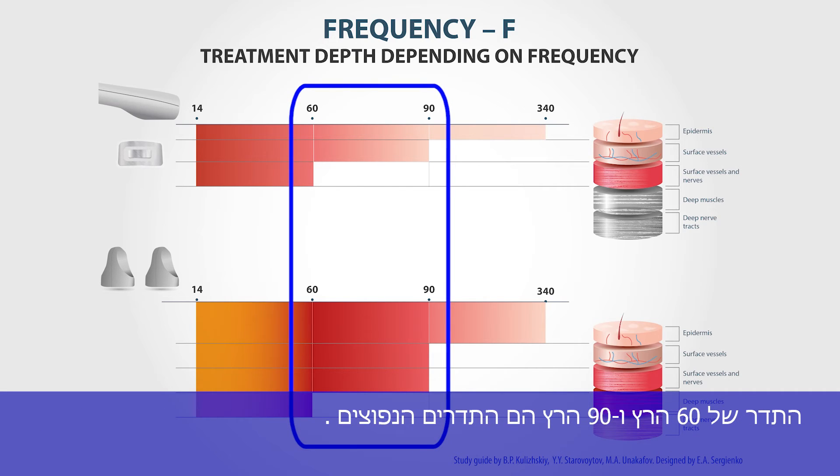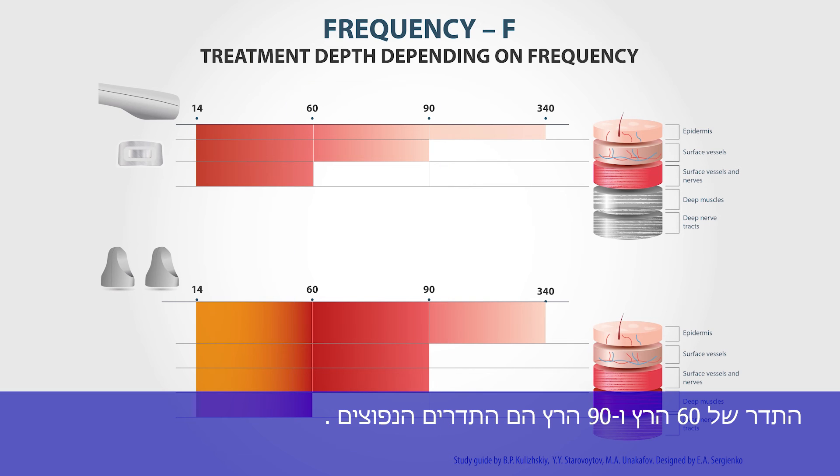The frequencies of 60 and 90 Hz are the universal values.